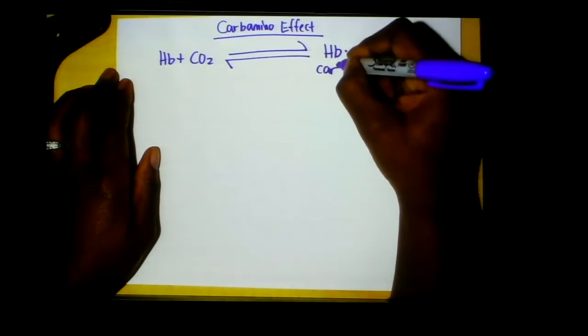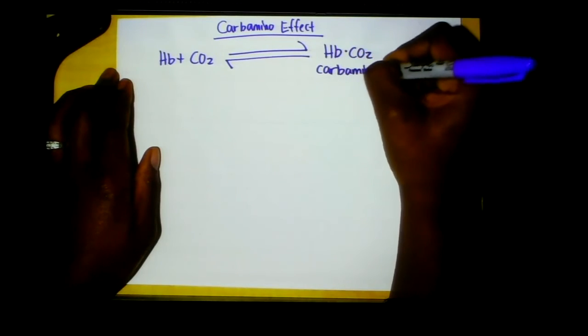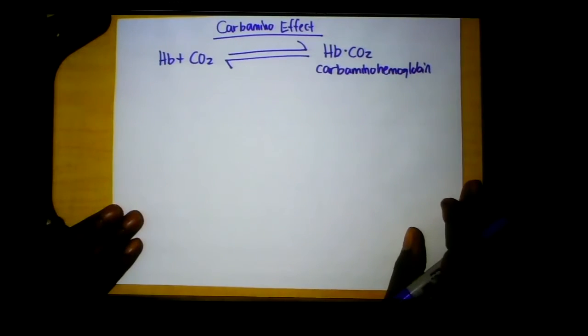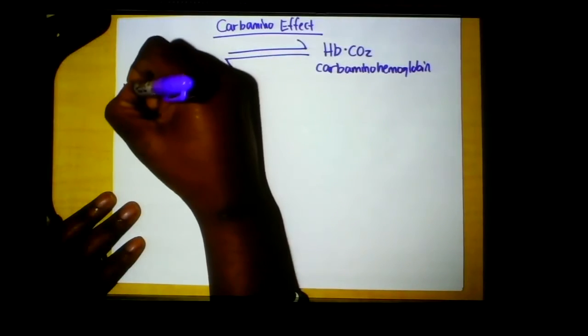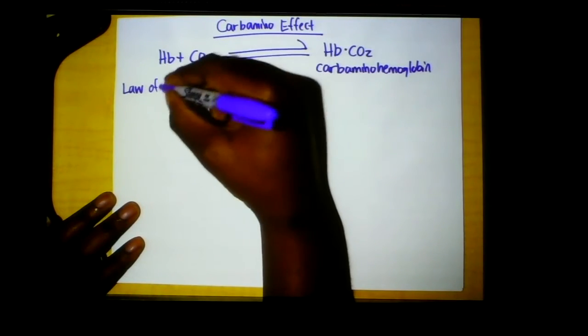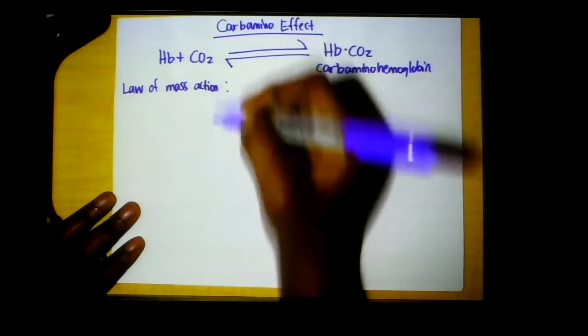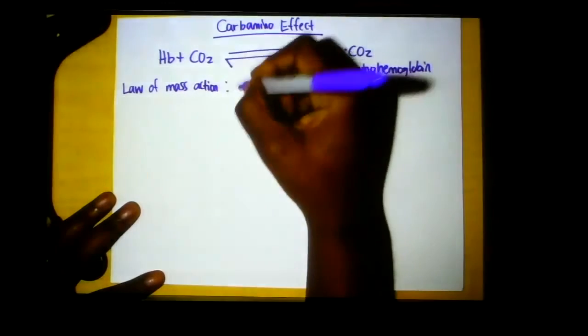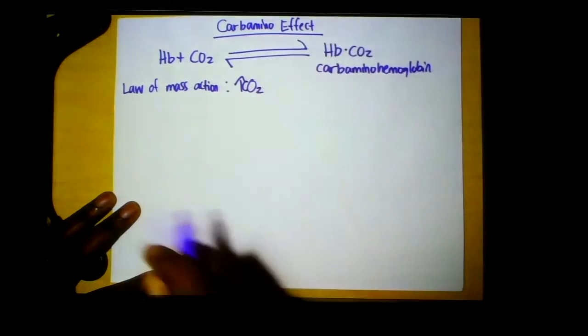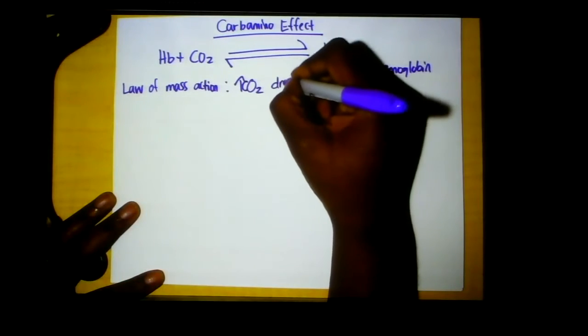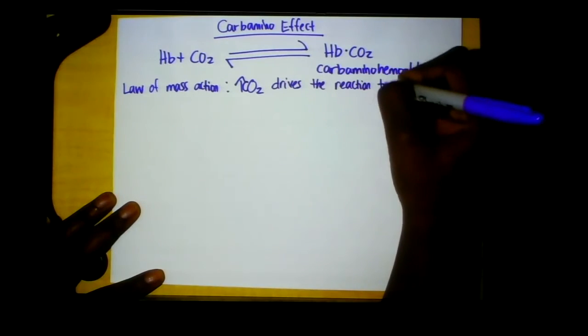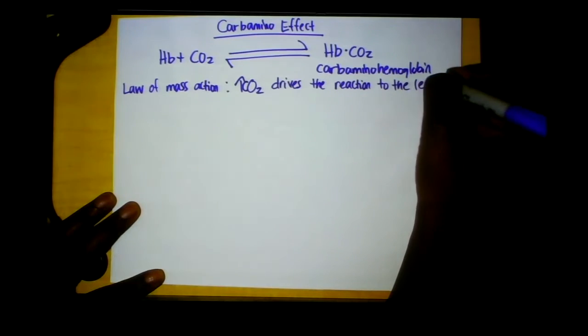We call this carbamino hemoglobin when it has that CO2 bound on. And again, we're looking here at the law of mass action, just to make sense of this, which states that if we have increased CO2, which is our product here, that drives the reaction to the left.